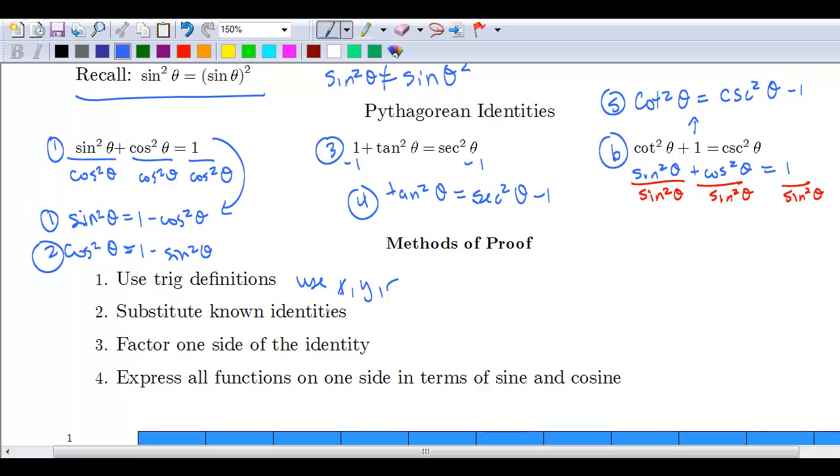The use of trig definitions is more of the use of x, y, and r or one, whereas the known identities are substituting in that one over cosine is really secant. I'm going to conclude the video here. The next video will actually look at some examples of how to use these methods to prove trig identities.